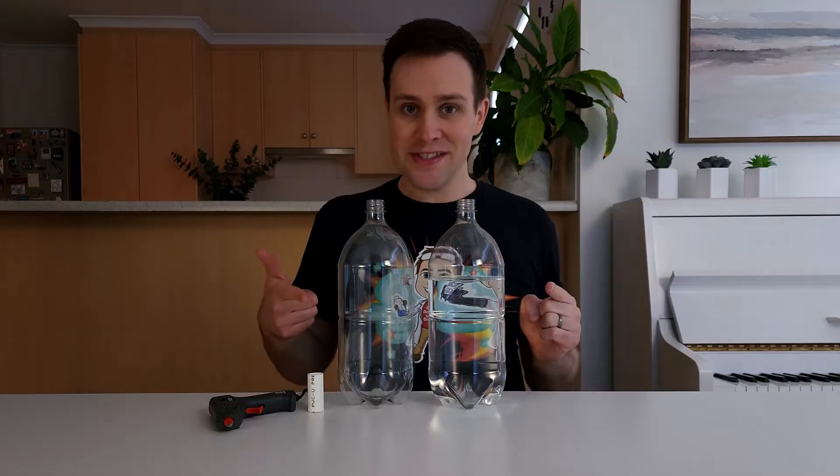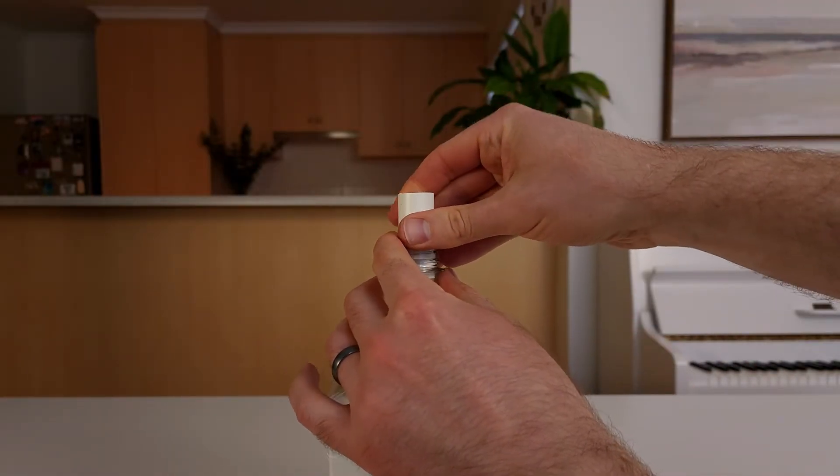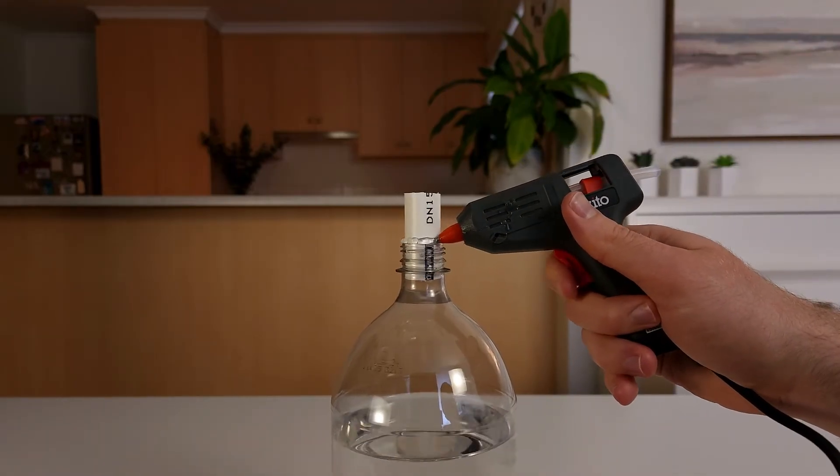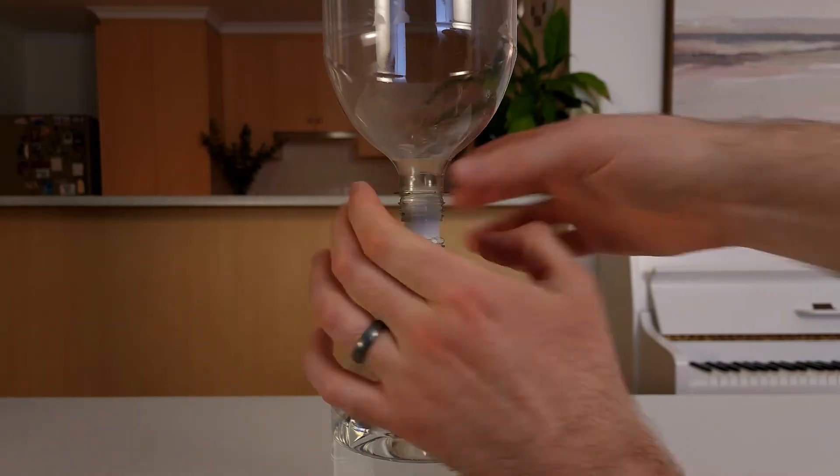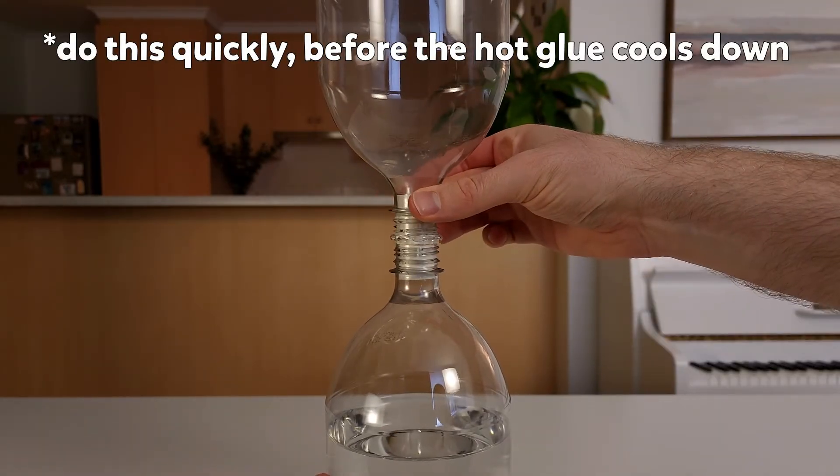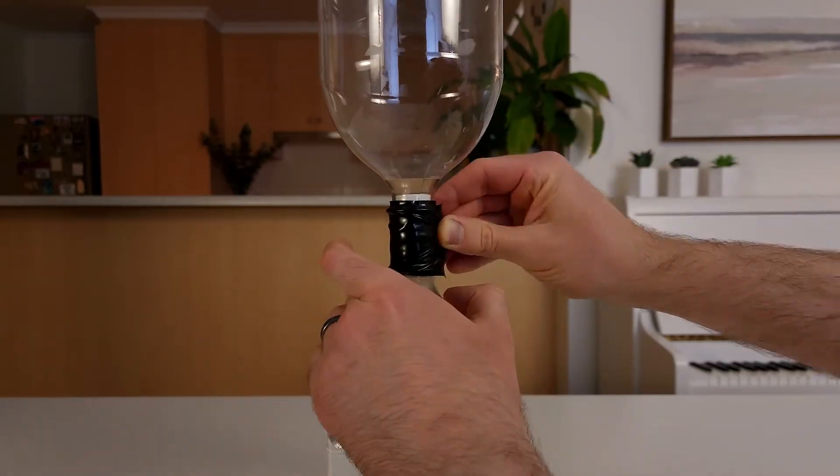The second way of connecting the bottles together involves pushing and twisting half of the PVC pipe into the bottle filled with water, then adding some glue where the PVC pipe touches the top of the bottle, and pushing and twisting the empty bottle onto the PVC pipe until the two bottles meet. You might want to add some duct tape to this one as well to hold it all in place.